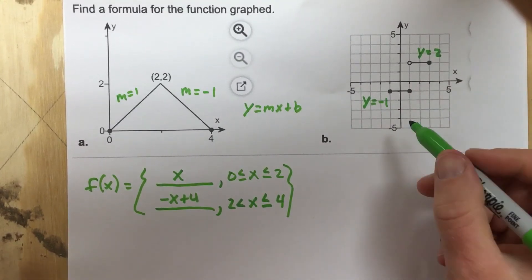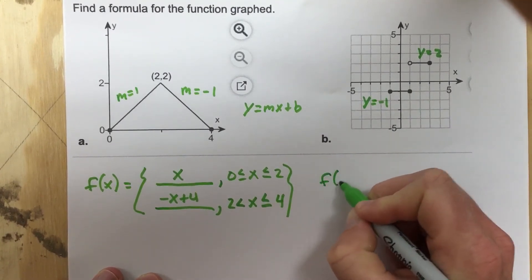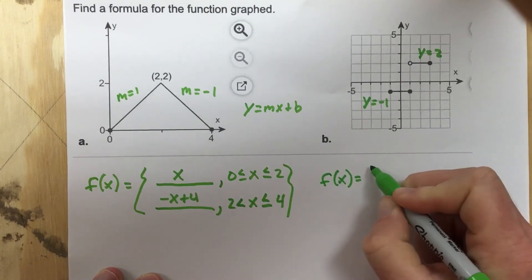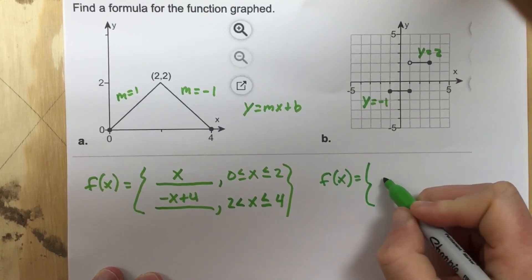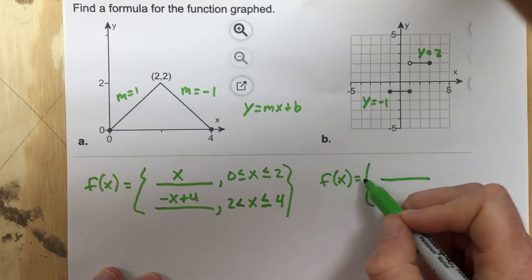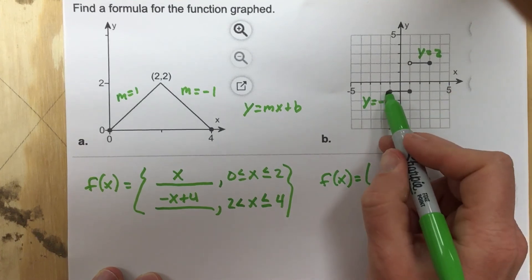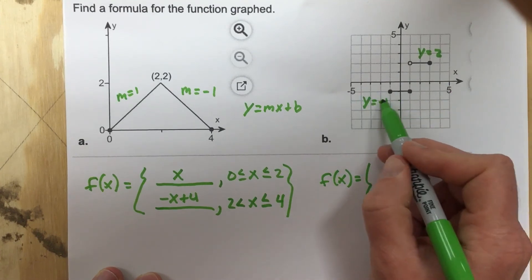So we're going to have another piecewise function because they separate here, and we're going to say f of x equals, and I don't have to write the y's because I wrote f of x equals here. So for the first function, because this is the farthest left x value, we start with the negative 1.